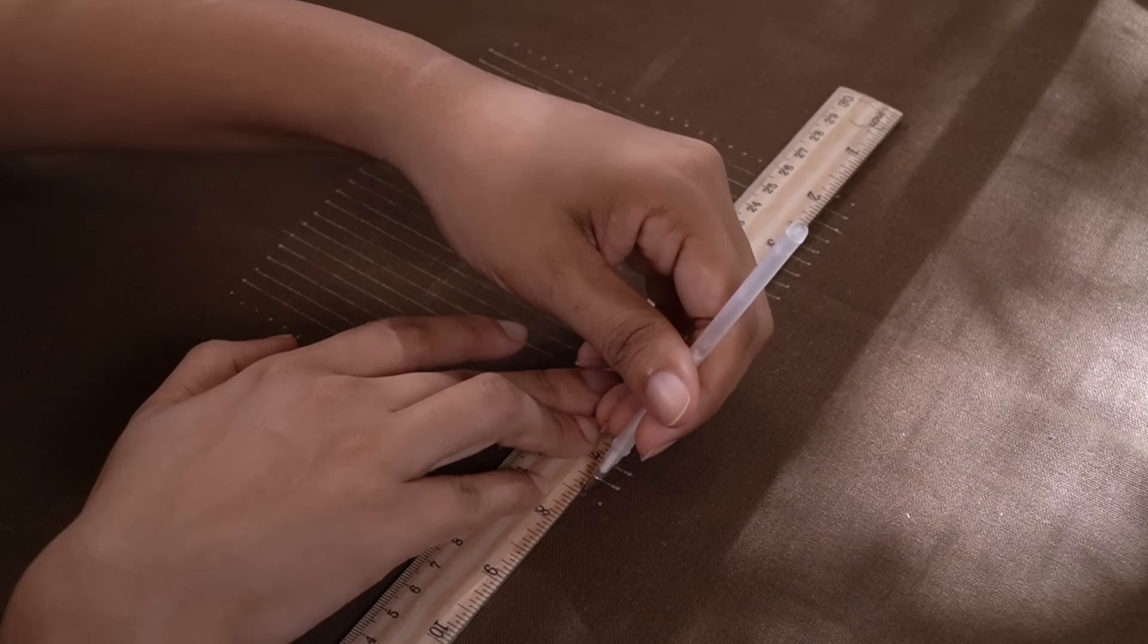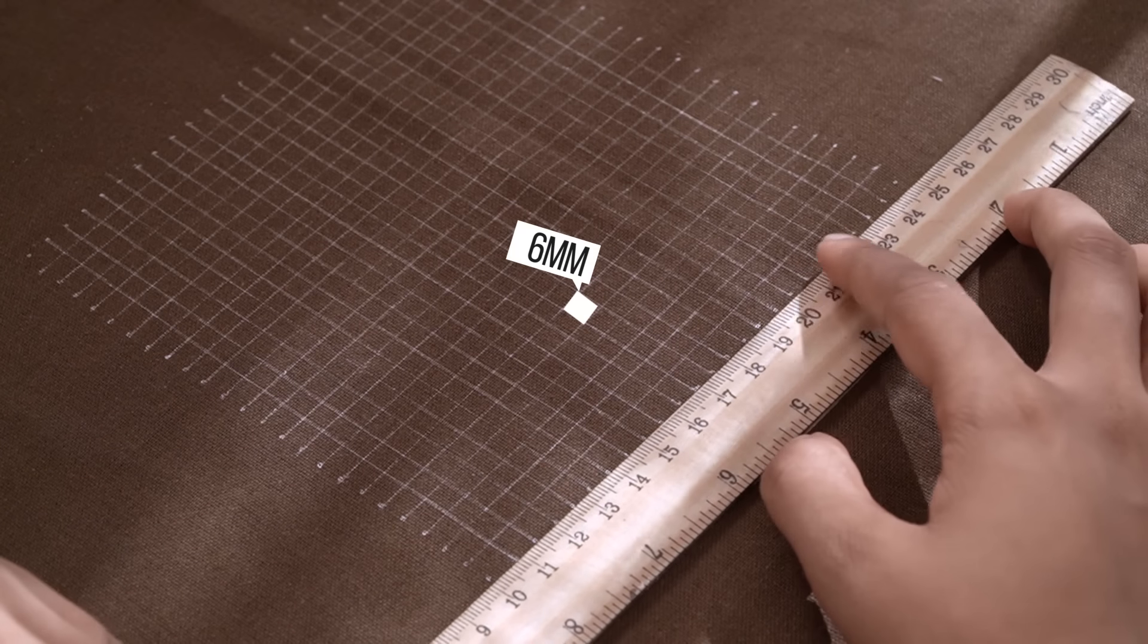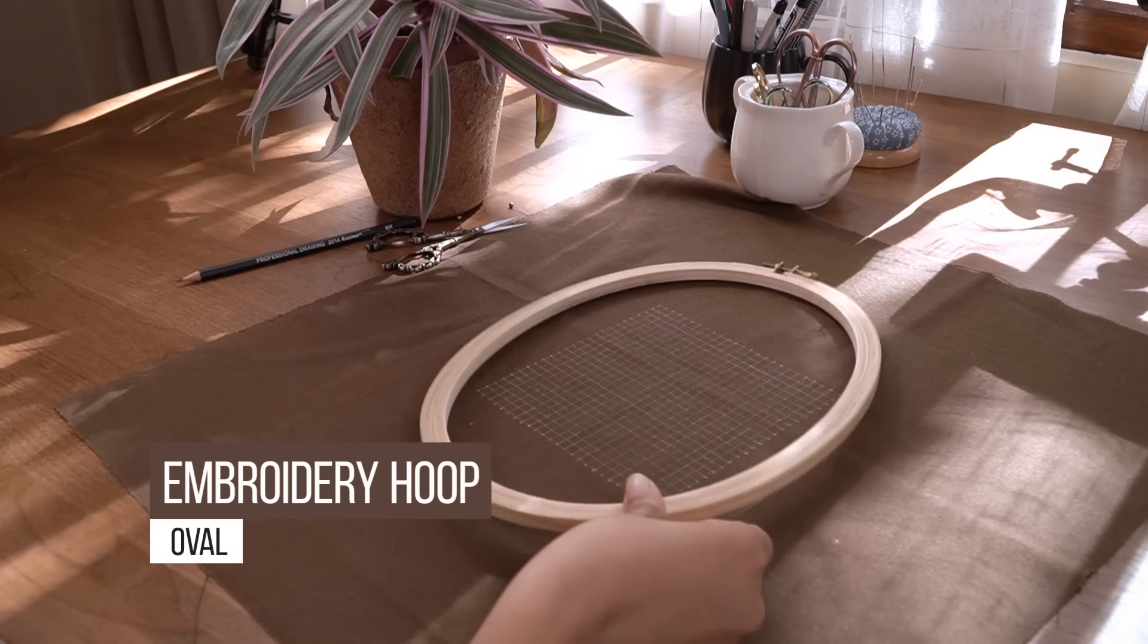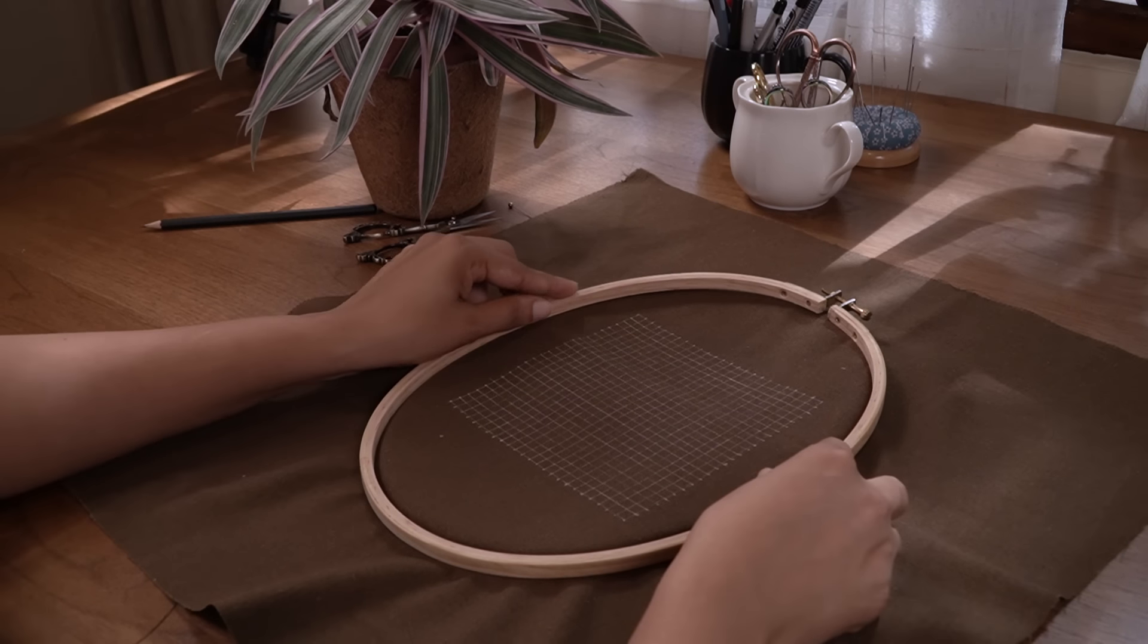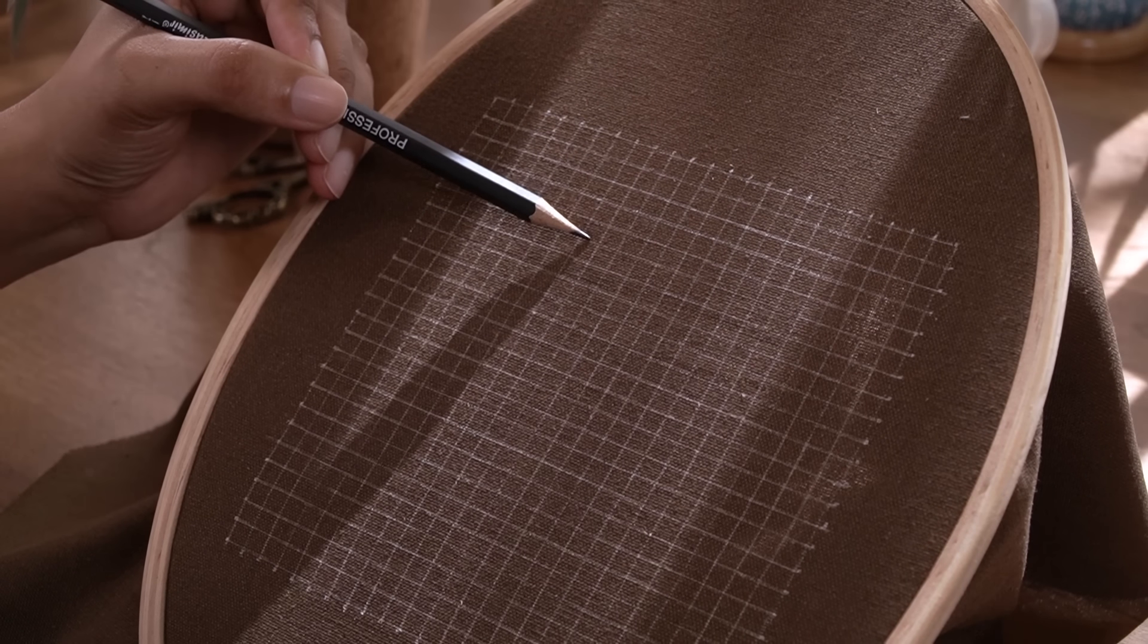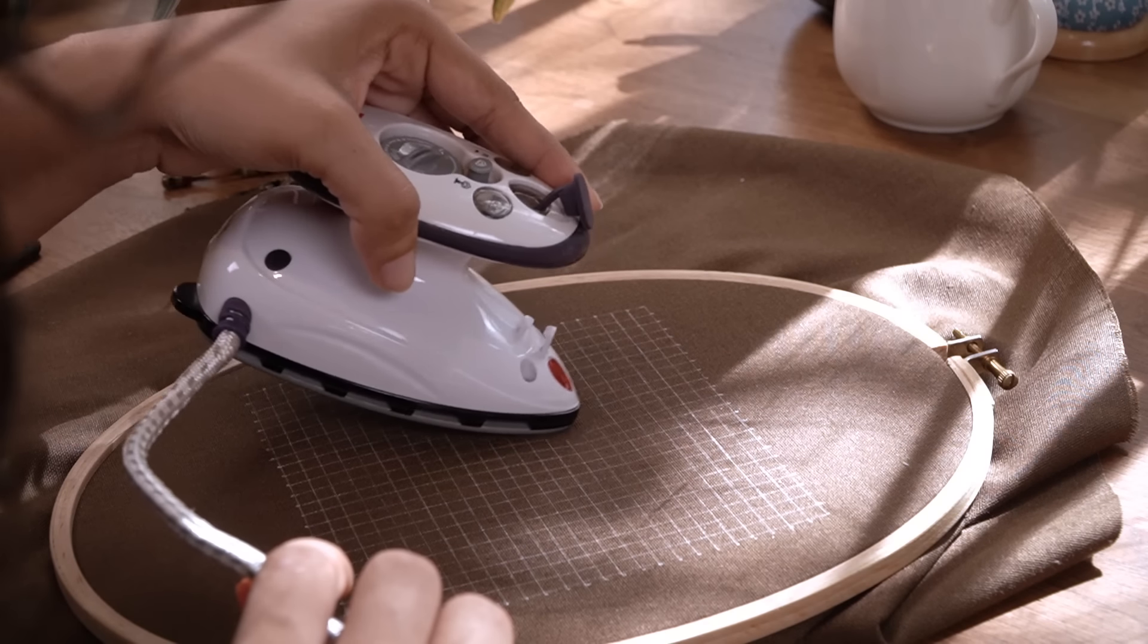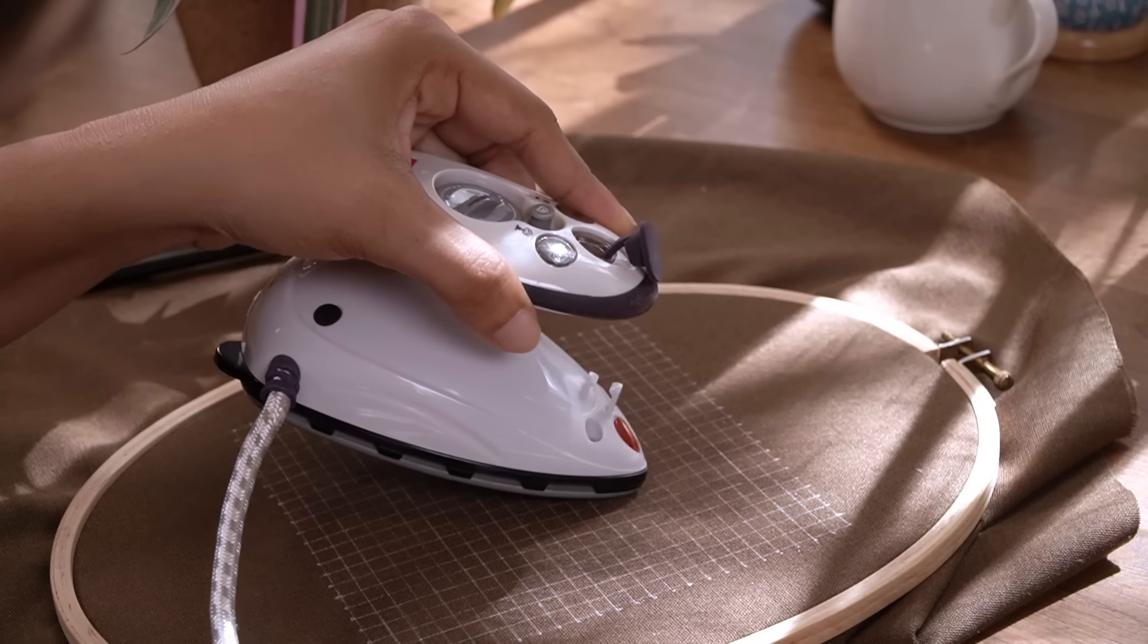I've used a heat erasable pen to draw a grid on the fabric. This nifty tool makes it incredibly easy to create precise lines. And the best part? It's erasable anytime with a bit of heat.